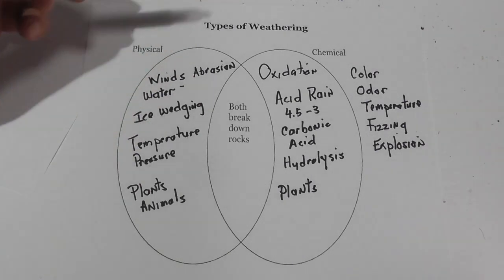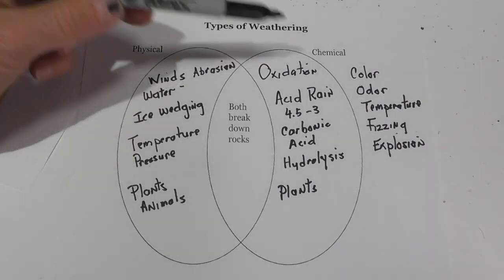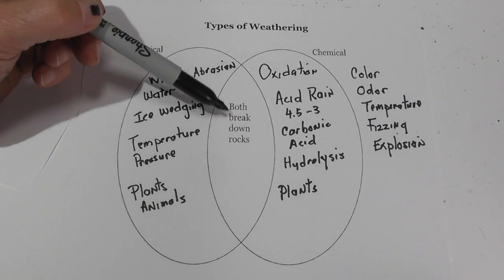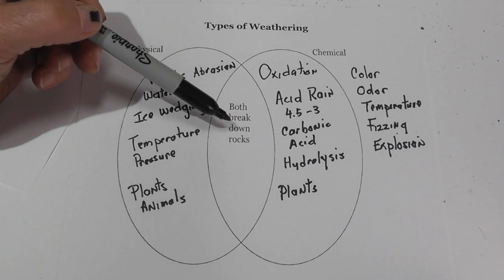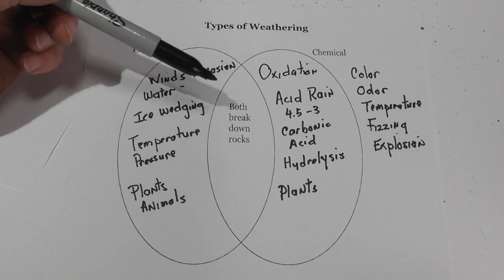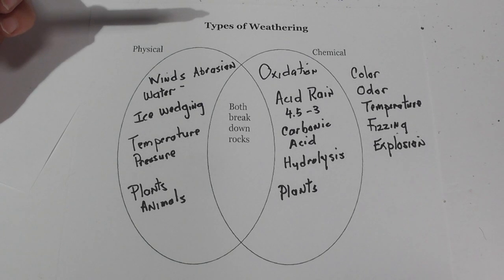The goal of both physical and chemical weathering is that it breaks down rocks. Then erosion can come along and move this rock material away.